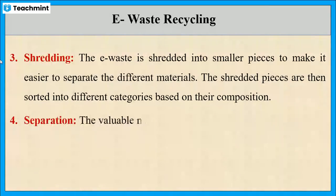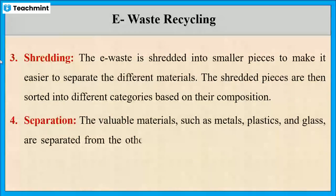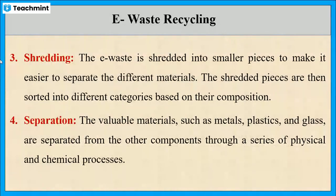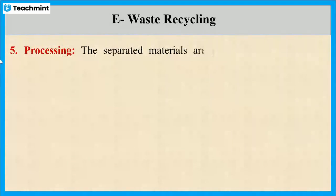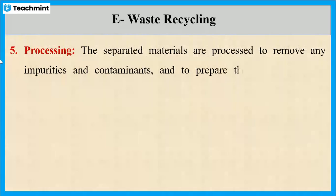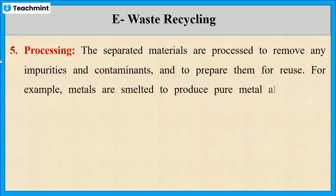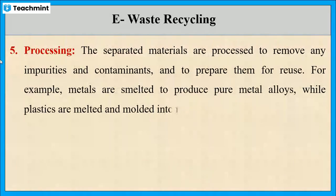The next step involves separation of materials from other components through a series of physical and chemical processes. Then comes processing, where the separated materials are processed to remove impurities and contaminants and to make them reusable. For example, metals are smelted or extracted to obtain pure metal alloys, while plastics are melted and molded to obtain new products.